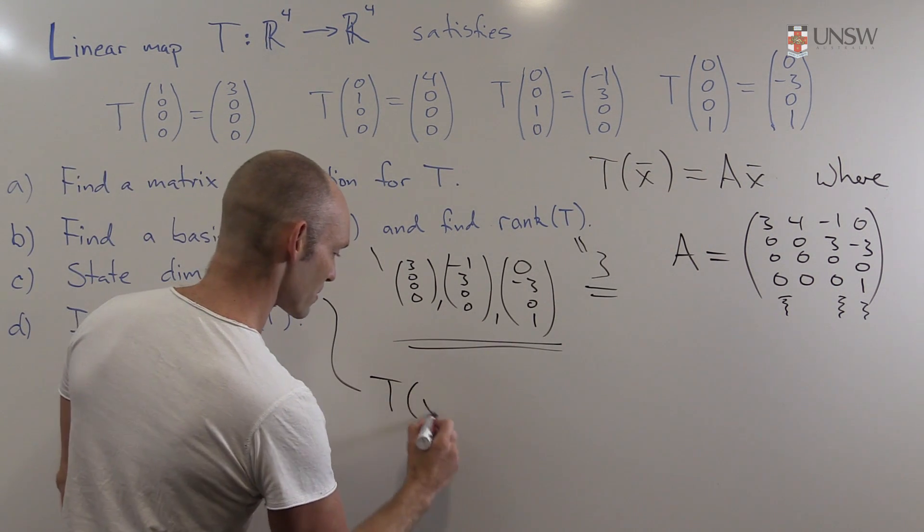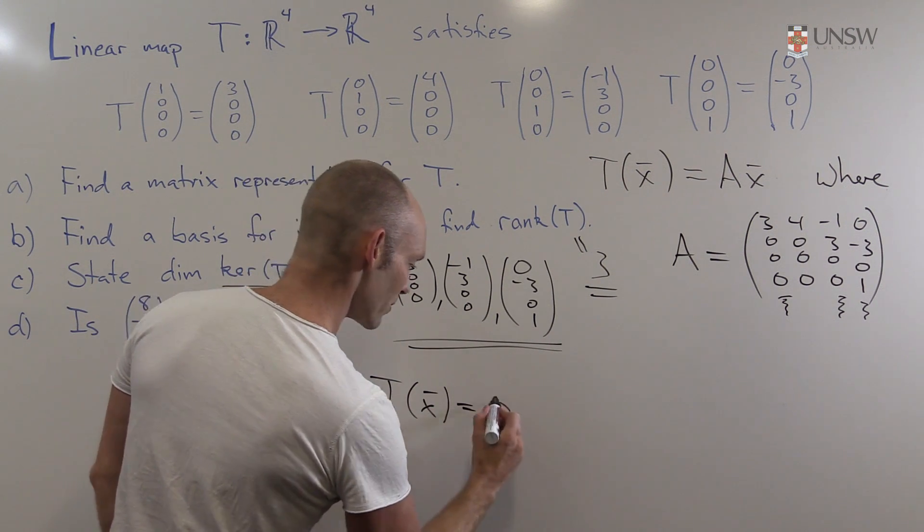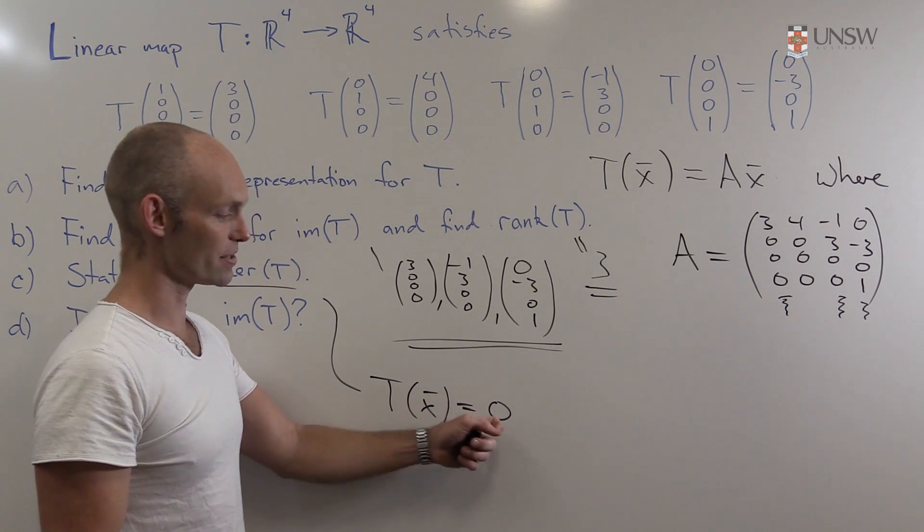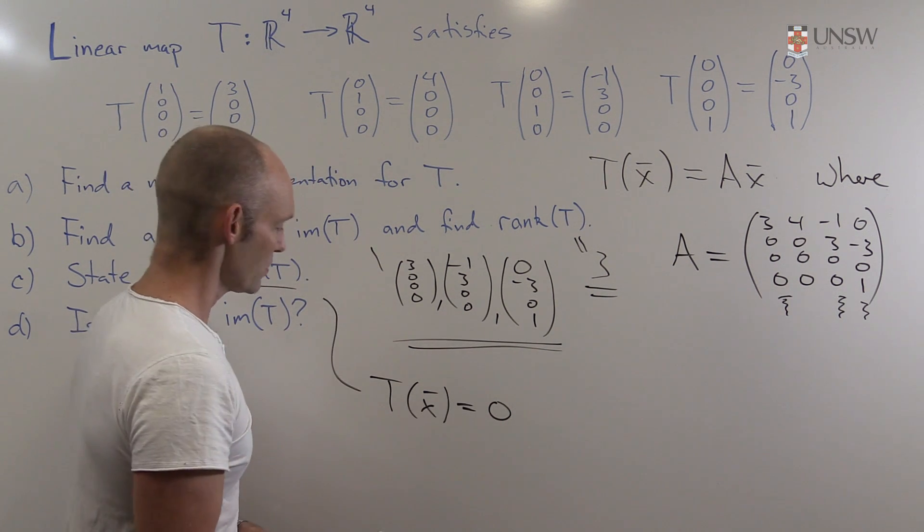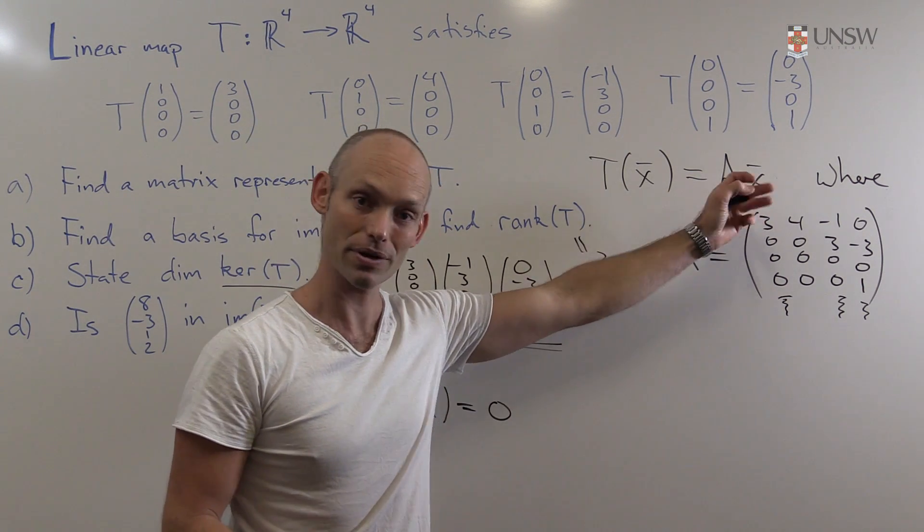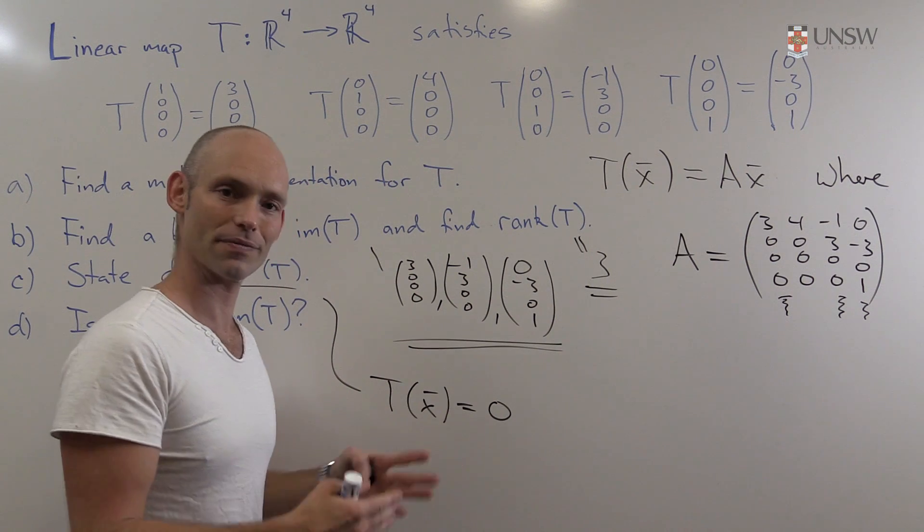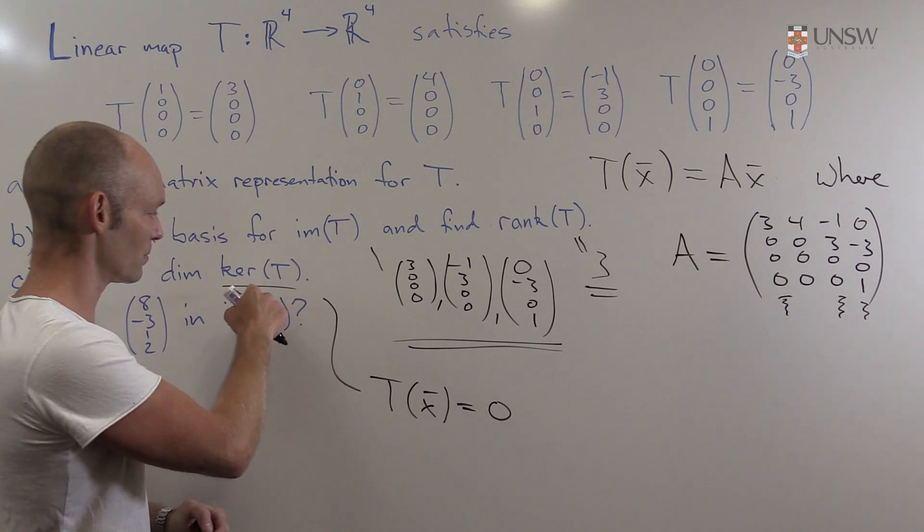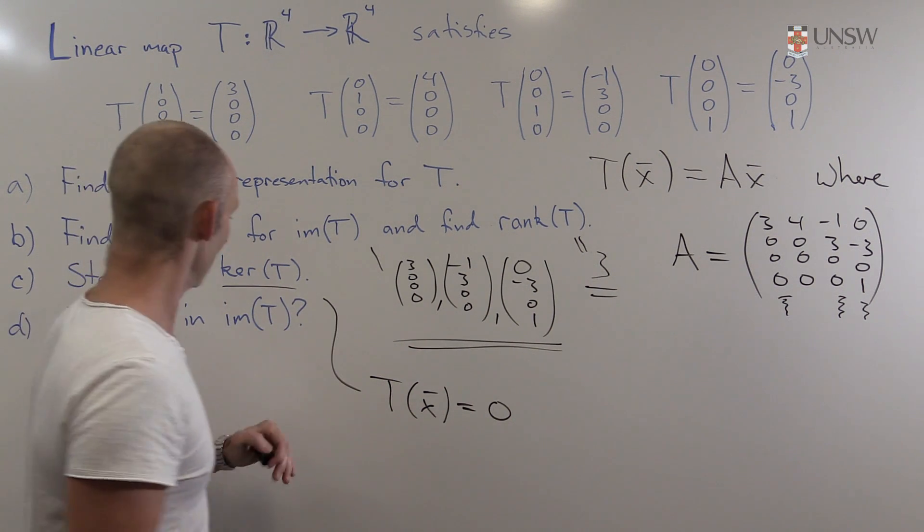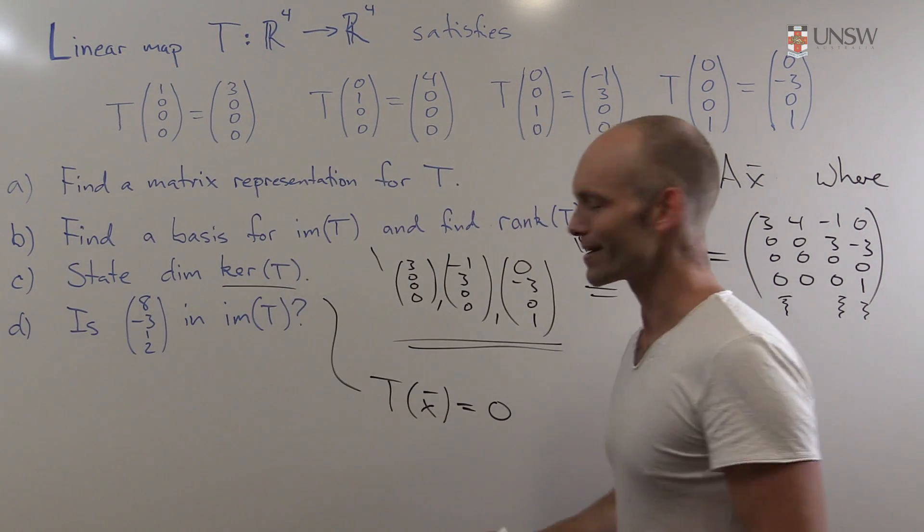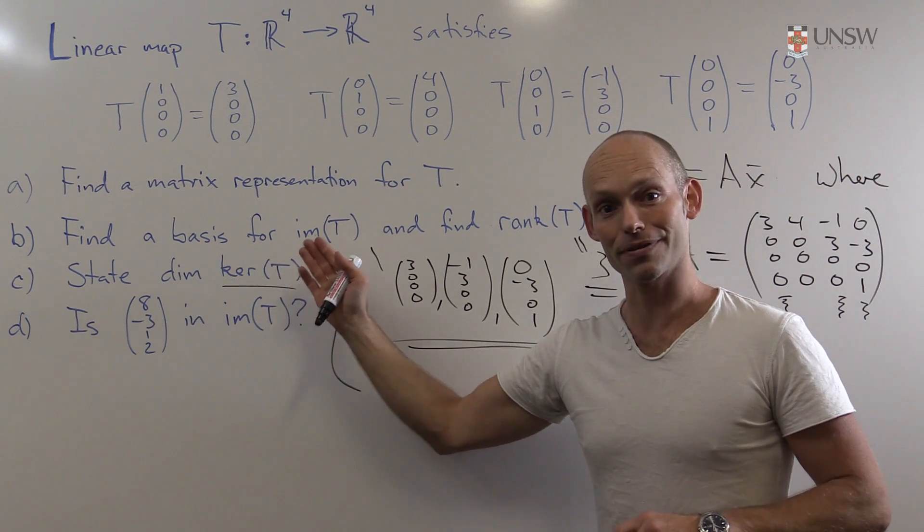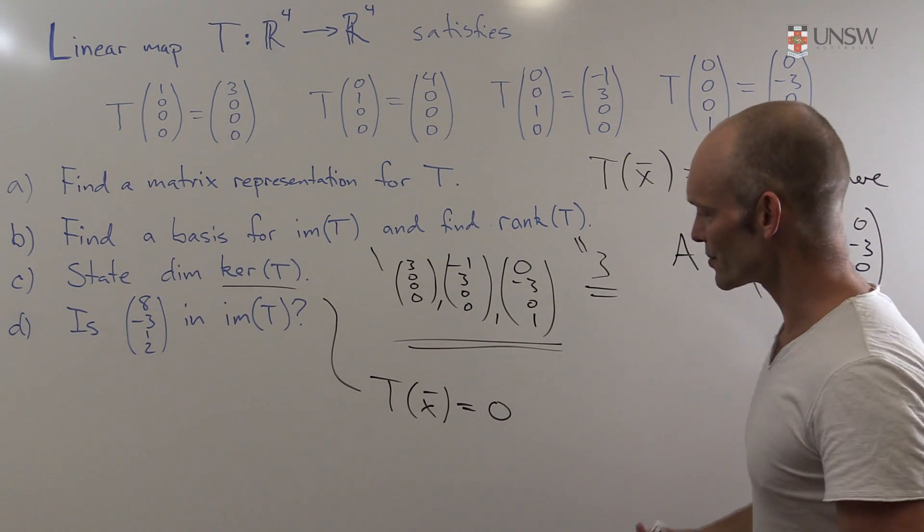That's the solutions to the equation T of x is equal to 0. Or in other words, since we have the matrix representation there, Ax is equal to 0. So if you wanted to find the kernel, you'd solve this, or in other words, Ax is equal to 0 equation. That would give you some vectors. And that's exactly what the kernel is there. That's the set of those vectors. It's a vector space. And as a vector space, it has a dimension. Now, we're not going to do that because we're only asked to find the dimension of the kernel, not the kernel itself.